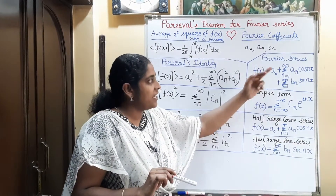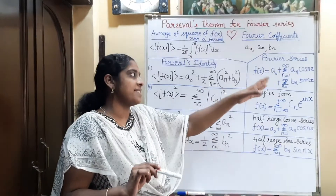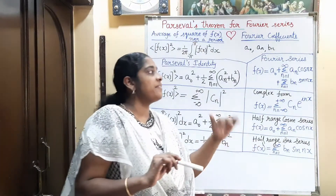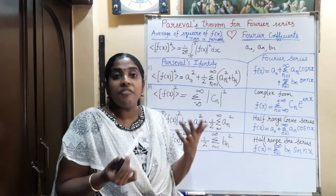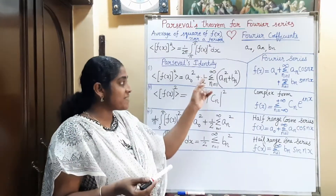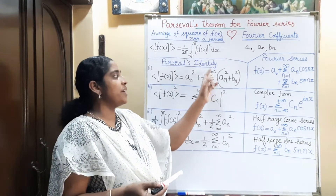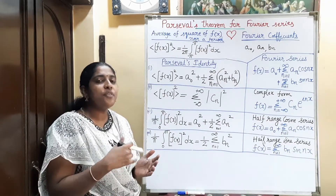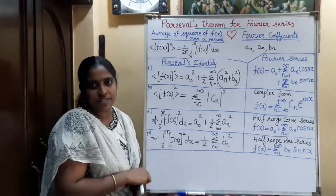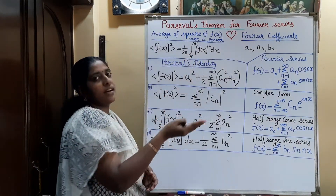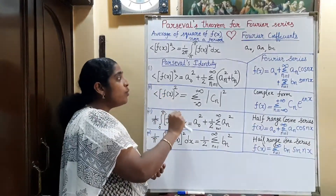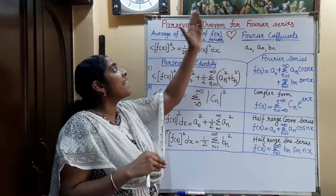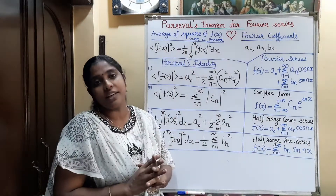We arrive at this by squaring the Fourier series expansion and finding the average. The factor of 1/2 appears because when doing the derivation, the cosine-squared and sine-squared terms come in, and the average of cos²(nx) is 1/2, and the average of sin²(nx) is 1/2. The beauty of this equation is not just in finding the average of the square of the function — that is very easy by direct integration. Rather, it shows how the average of the square of the function relates to the Fourier coefficients.